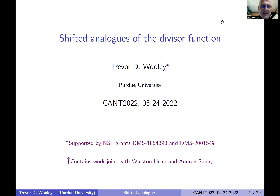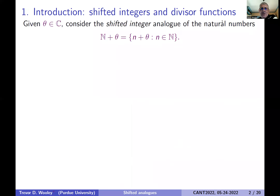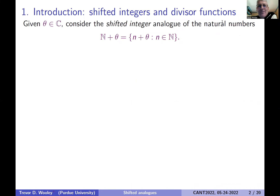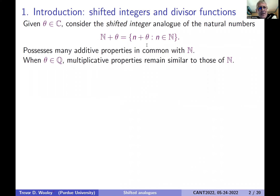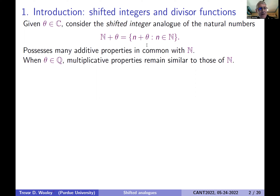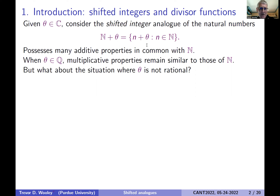So, shifted analogs of the divisor function — what's this all about? Let's look at the shifted integers. That's an additive problem, and that's what this meeting is all about. We're going to shift the integers by what might be a complex number θ. This possesses many additive properties in common with n; in fact, if you stick with additive properties, all of its properties are common to n. But if you look at the multiplicative properties of this set, things change a bit — and that's what this talk is really about.